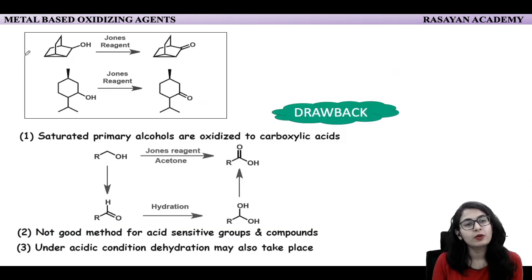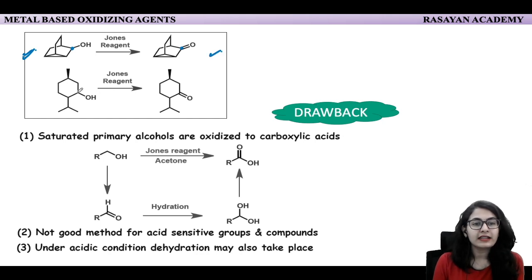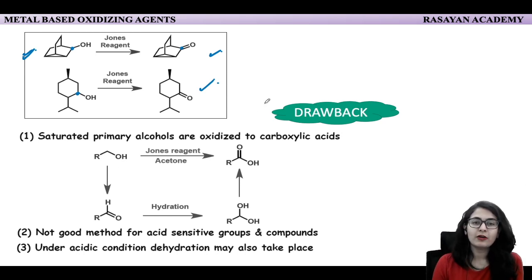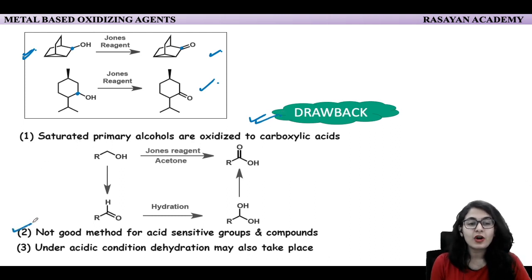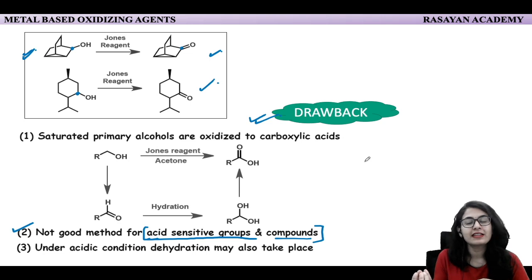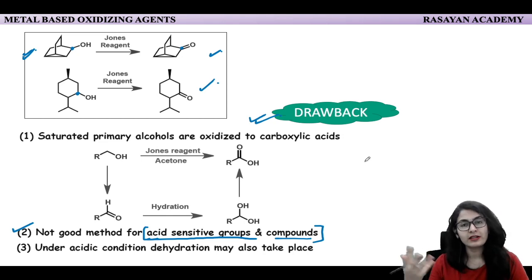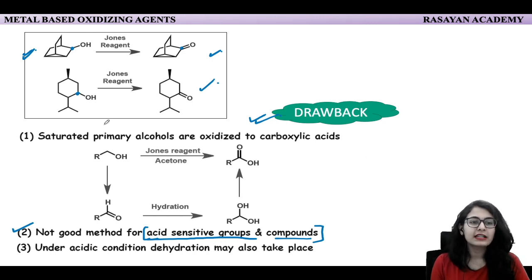If you are taking a secondary alcohol, it will convert to a ketone at room temperature because further cleavage does not happen. So, only to a ketone. There are more examples: a strained secondary alcohol still gives you the ketone only, and another secondary alcohol also gives the ketone. An important point about Jones reagent: it is a very strong oxidizing agent. However, it is not a good method for acid-sensitive groups and compounds — this is the most important drawback.